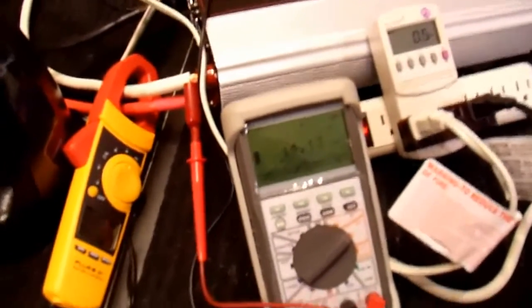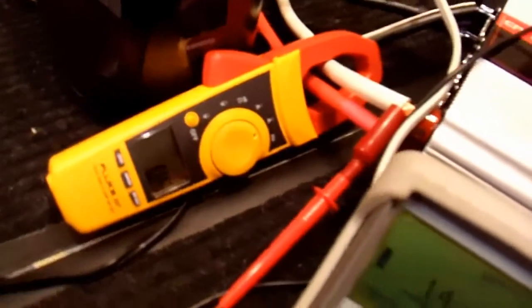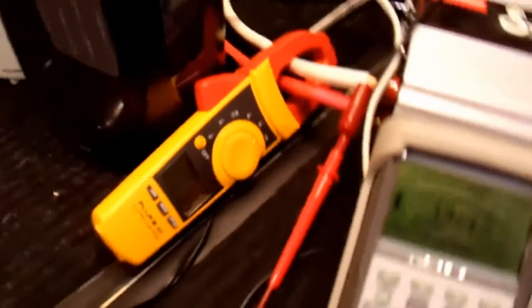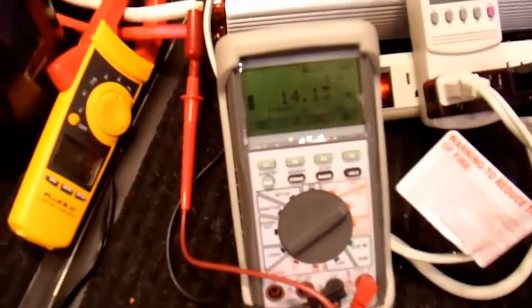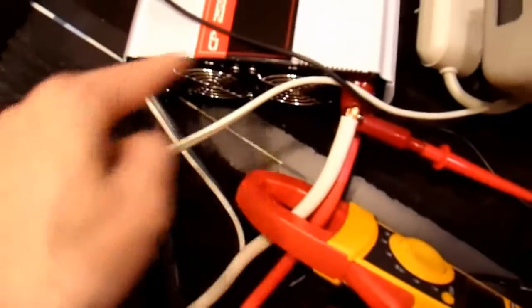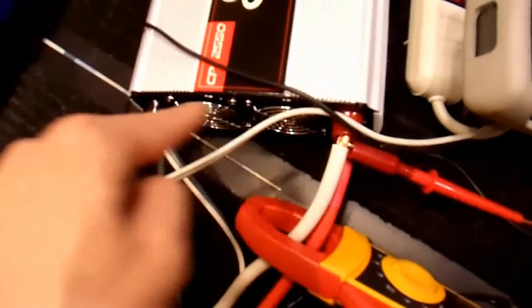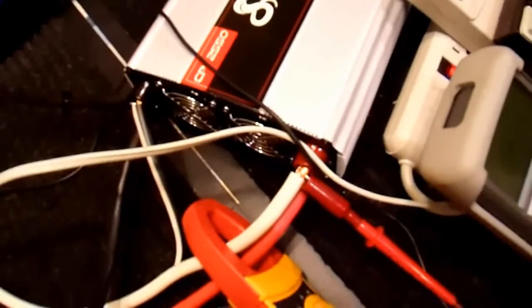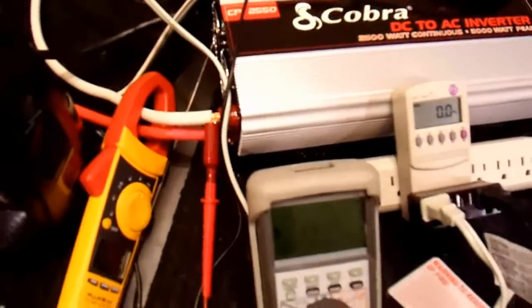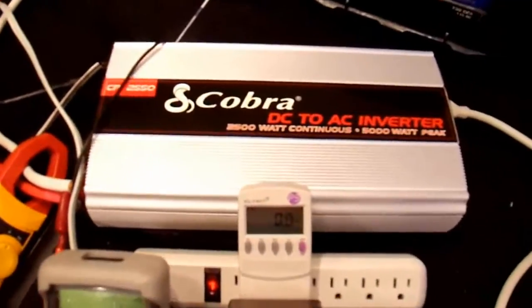So for this test setup, I have my DC clamp meter connected up to the input power cables. I have a DC multi-meter connected up right across the input terminals right here at the inverter. There's a significant amount of efficiency loss in the cabling going to the batteries, but it's really unfair to include that because that's not the inverter's fault. That's the cabling.